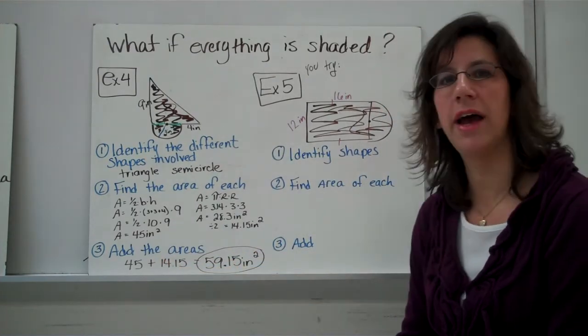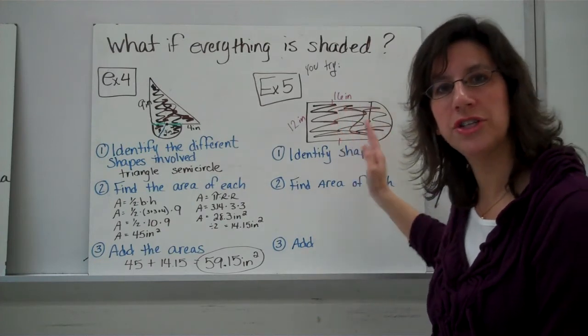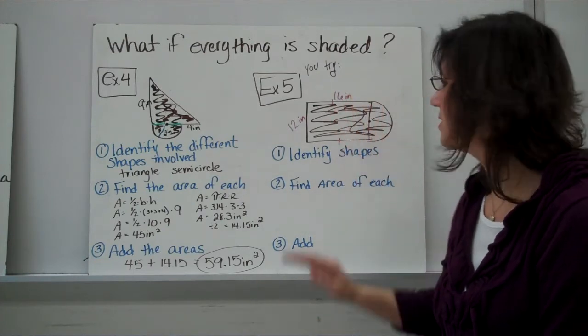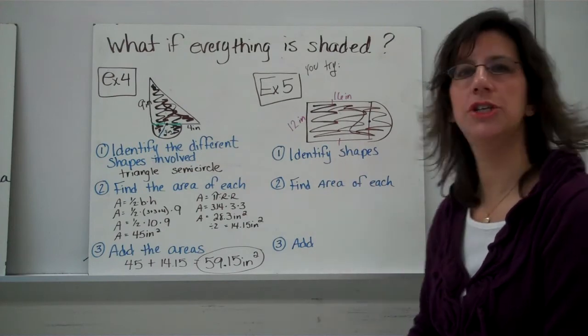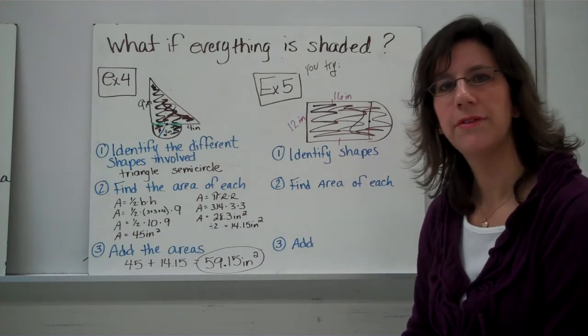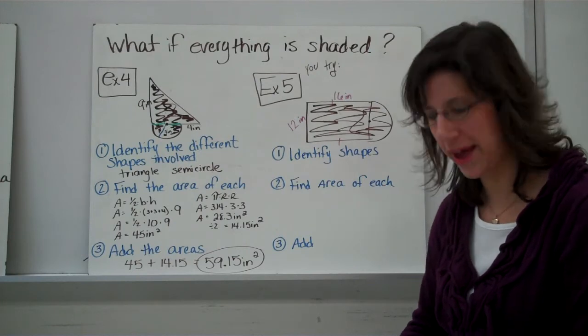Alright. Give this example 5 a try. Pause the video. Draw the shape. Color in the pieces that need to be colored. And, see if you can figure out how much of this shape is shaded. Find the area of the composite figure. And then, come on back.